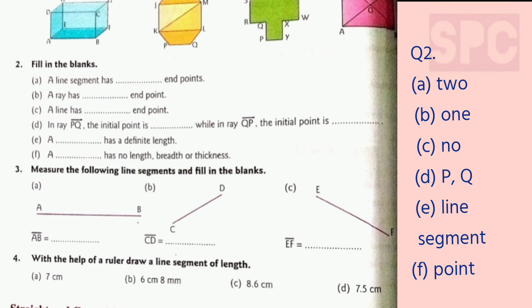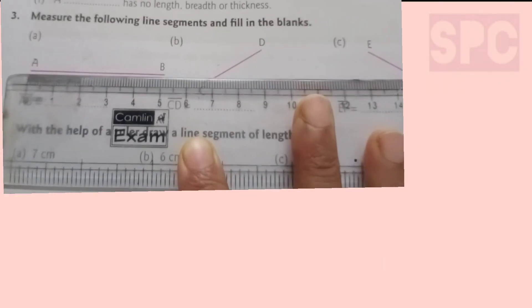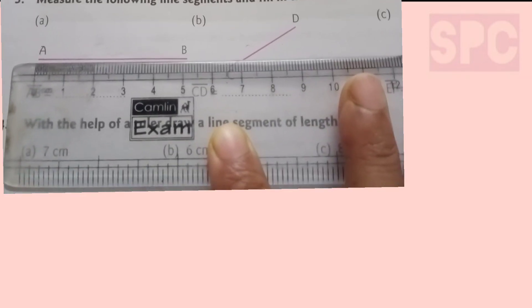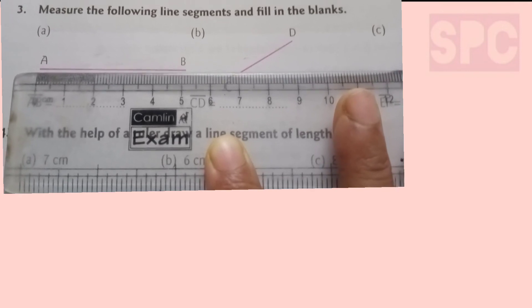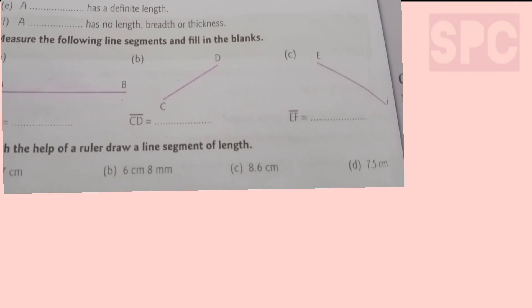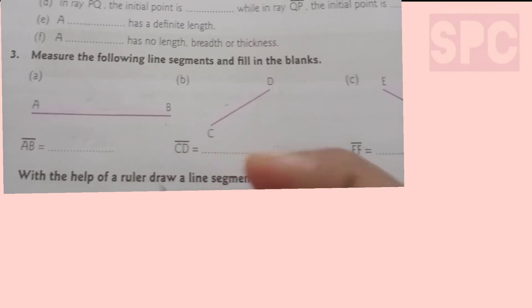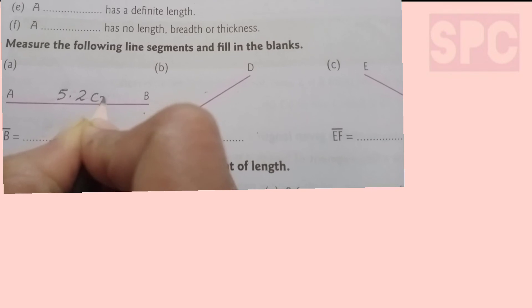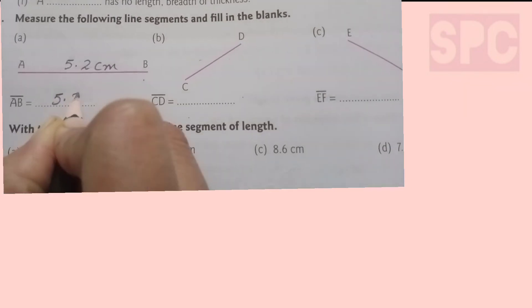Question 3: measure the following line segments and fill in the blanks. Some line segments are given — we have to measure them using a ruler. For part A, point A and point B are the end points of line segment AB. We keep the 0 of the ruler at point A and read the length at point B. After measuring, line segment AB is 5.2 cm.